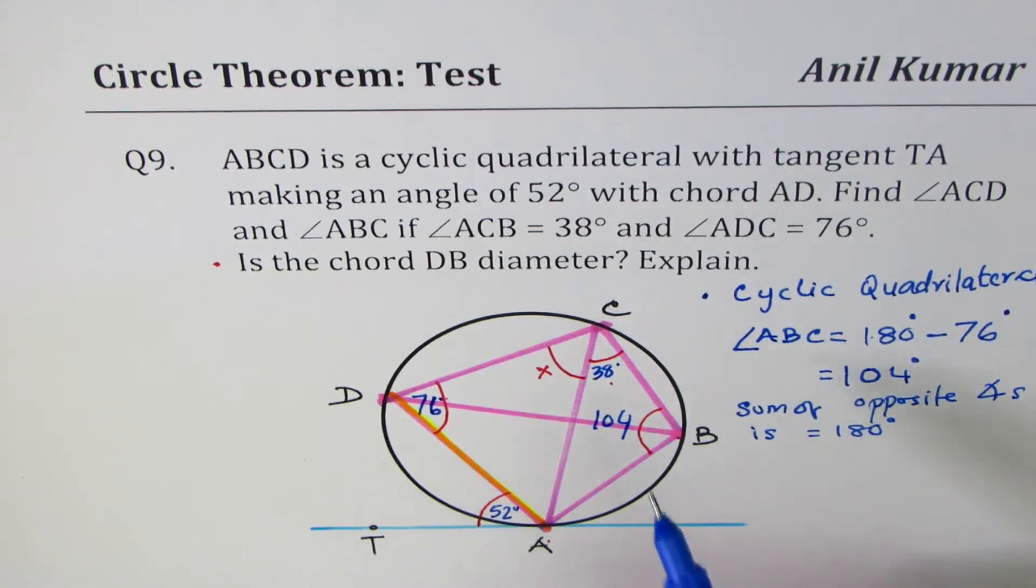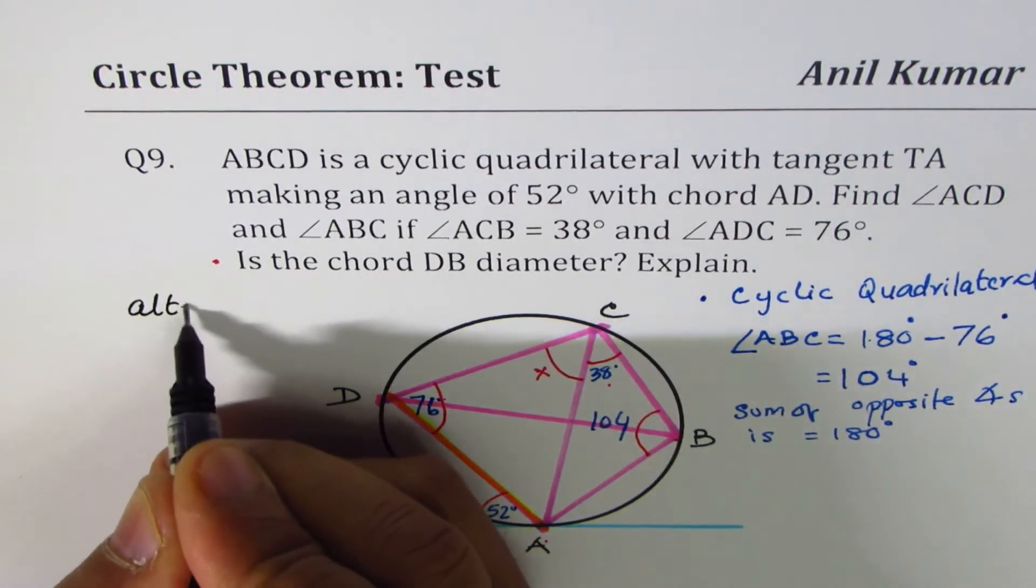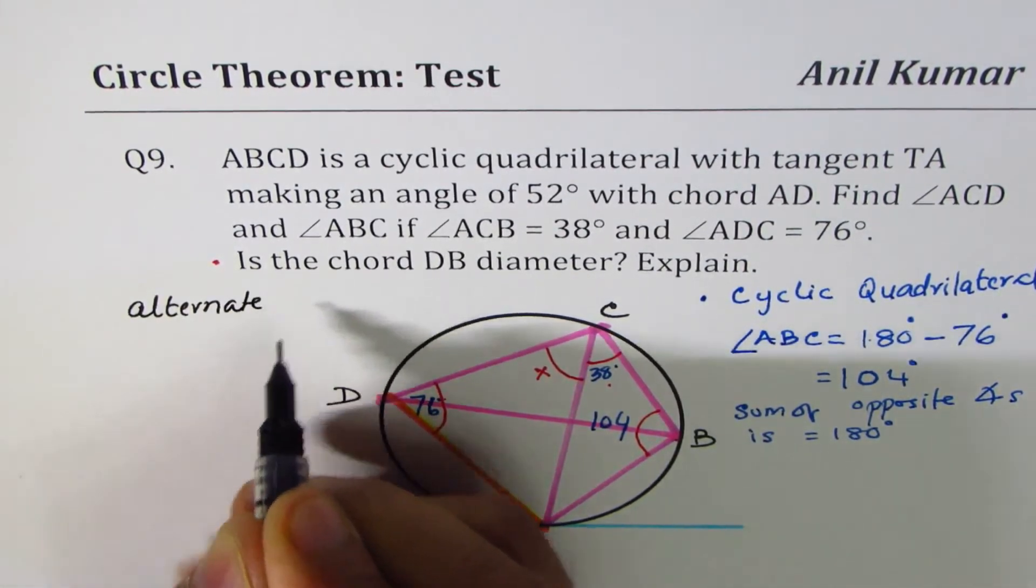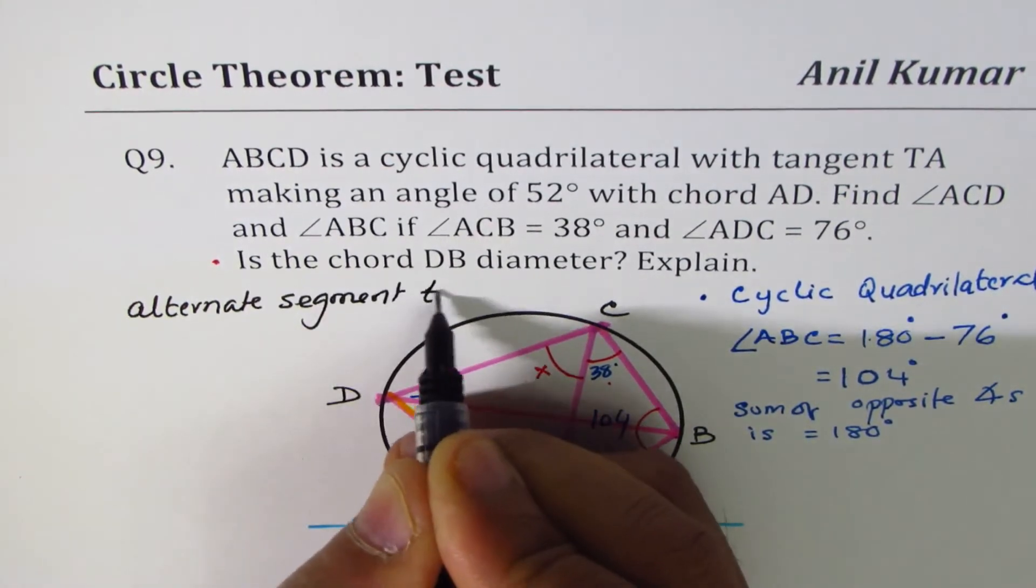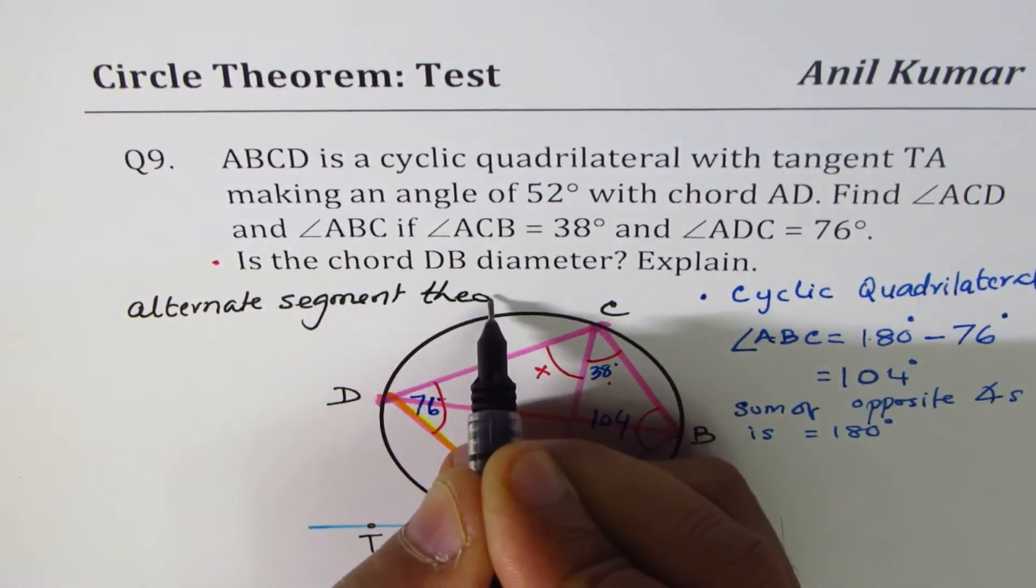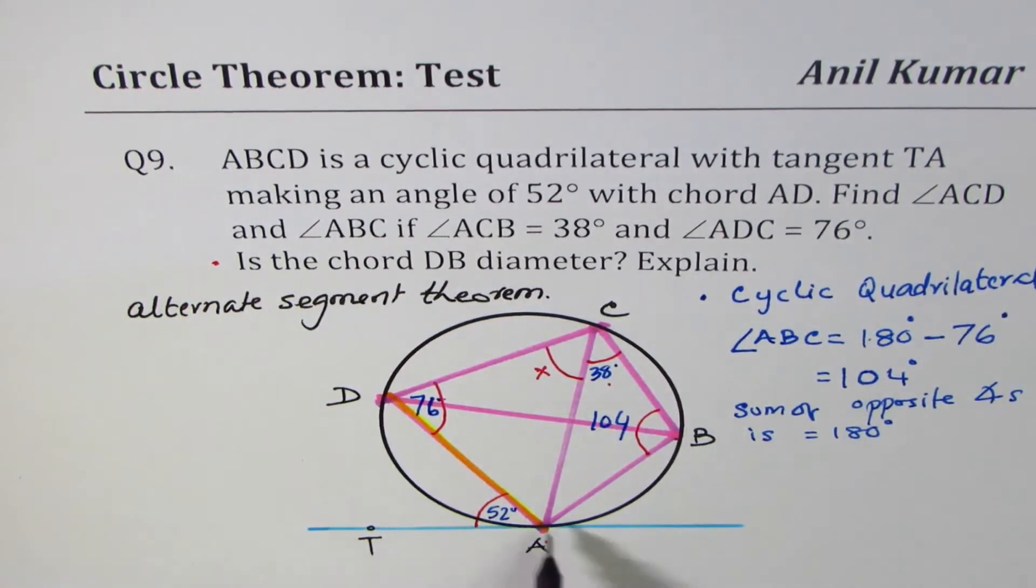Now to find angle X, what we can do is apply the alternate segment theorem. So whenever you are given a tangent and a chord combination, it's always alternate segment theorem.